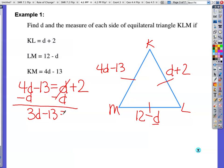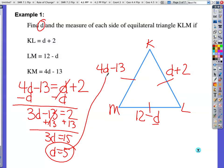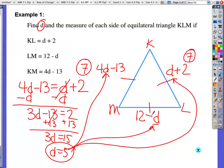So d plus 2 equals 4d minus 13. Add 13 to both sides. Now I have 3d equals 15. And now d equals 5. If d equals 5, I've found the value of d and the measure of each side. So now I'm going to go back up in here. 5 times 4 is 20. 20 minus 13 is 7. Now most of us are going to be like, it's equilateral, so all the sides should be 7. But if I were taking a quiz or a test, I would just do a quick little check. 5 plus 2 is 7. And then just one more check. 12 minus 5 is 7? Yes, it is. So we've definitely done the math right there on that one.